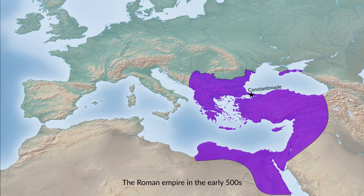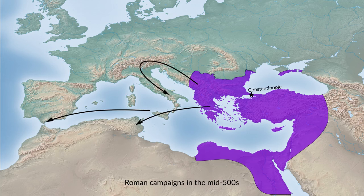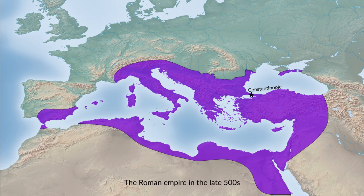In fact, there was an effort during the 500s on the part of the Eastern Roman Empire to reconquer the lands of the West — what had been the Western part of the Roman Empire — to reunify those territories. It was not ultimately successful, and eventually those territories were lost again.